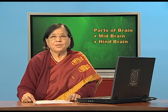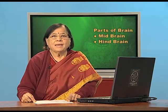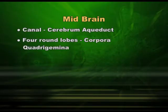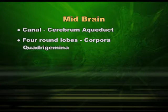In the previous session we discussed the forebrain. The midbrain is the second part. Midbrain has a canal which is called the cerebral aqueduct — the word cerebral comes from cerebrum. It also has four round structures which we call lobes or quadrigemina. These two parts really make the midbrain, but midbrain has many other roles to play.